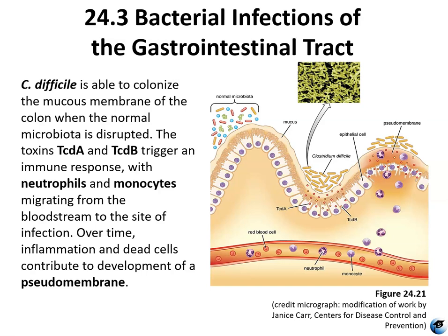C. difficile colonizes mucous membranes of the colon, and is able to do this because the normal microbiota that would normally compete for attachment sites and antagonize C. difficile are depleted due to antibiotics. C. difficile has toxins that trigger an immune response from the host, and it ends up migrating into the bloodstream, making it a systemic infection. Over time, increased inflammation causes dead skin cells and dead mucosal membrane cells to develop a pseudomembrane covering the lining of the gastrointestinal tract, leading to the inability to absorb nutrients and fluids, which can eventually lead to death.